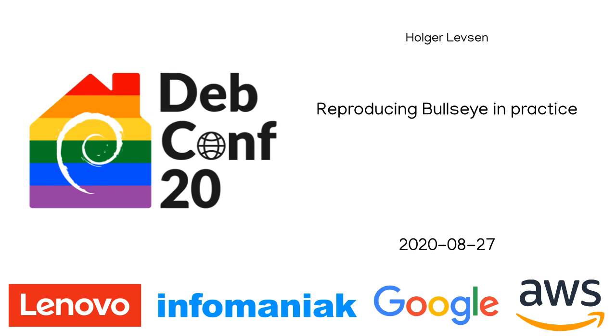Hello everybody, and welcome to our talk, Reproducible Builds in Practice with Holger Lebsen. Holger is a Debian user since 1995 and a Debian developer since 2007. He works in many teams inside Debian like Debian Edu, Reproducible Builds, LTS, Debian QA, as well as being the founder of the Debian video team. Enjoy his talk.